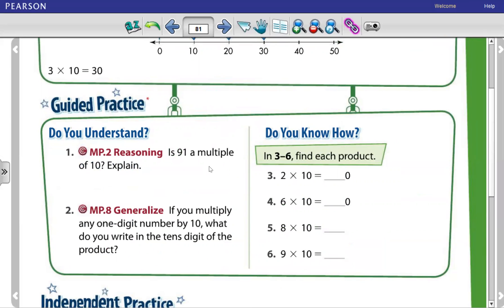Let's solve question number 1. Question number 1 said, is 91 a multiple of 10? Explain. So as we know, 9 times 10 equals 90. 9 times 1 equals 9, with the 0, 90.